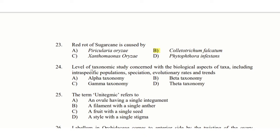24th question: The level of taxonomic study concerned with the biological aspects of taxa, including intraspecific population, speciation, evolutionary rates and trends — option A: alpha taxonomy, option B: beta taxonomy, option C: gamma taxonomy, option D: theta taxonomy. The answer is option C: gamma taxonomy.